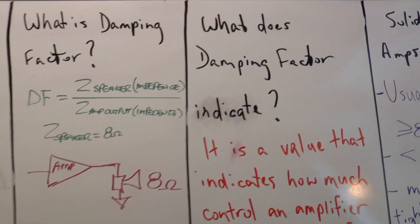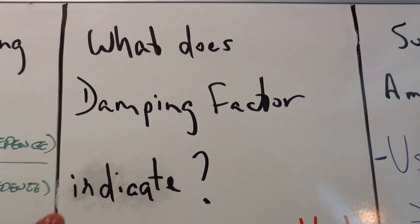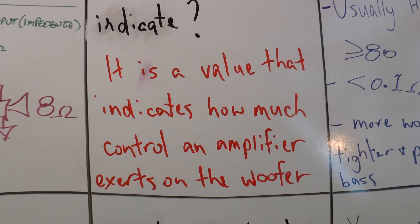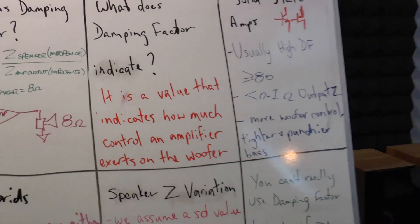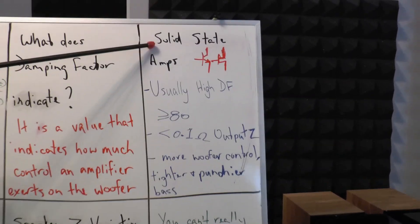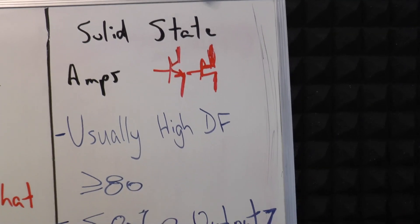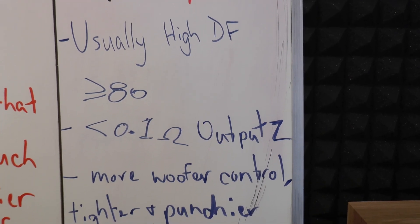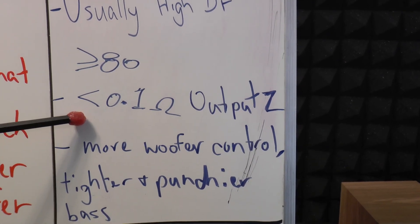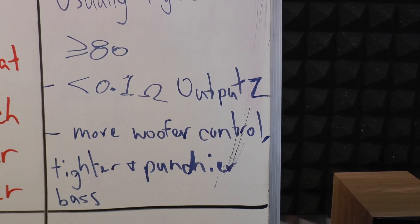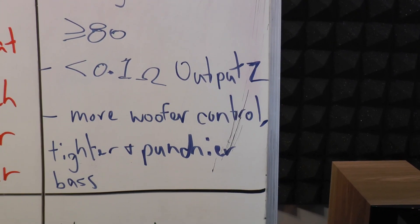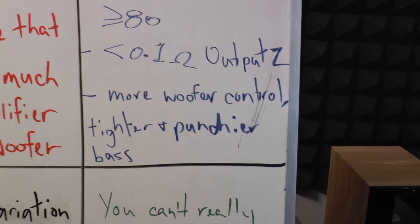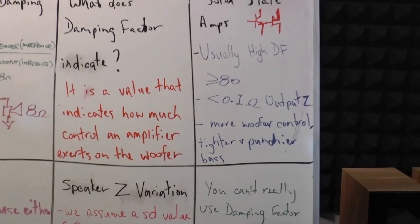What does damping factor indicate? Damping factor is a value that indicates how much control an amplifier exerts on the woofer. Does it stop it from flapping? Does it stop it from pushing too much? Solid-state amplifiers usually have a high damping factor that's greater than or equal to 80, and the usual output impedance of a solid-state amplifier is about 0.1 ohms. This gives you more woofer control—what is called tighter and punchier bass, a little bit more forceful, a little bit more aggressive.